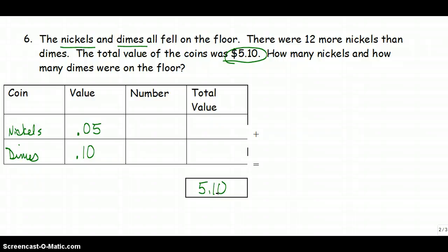Now let's see what we know about the number. Well, it doesn't give me a total number this time. This time they worded it a little different. There were 12 more nickels than dimes. So now I'm going to say, well, if I have d dimes...